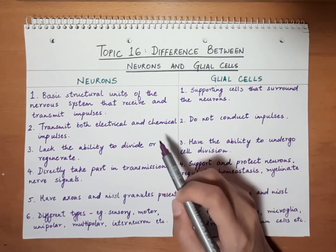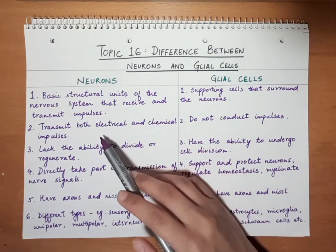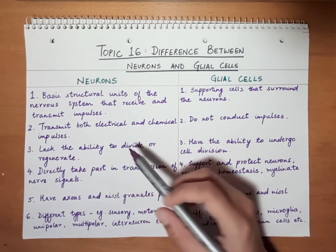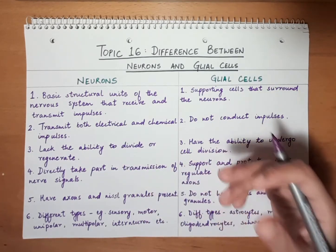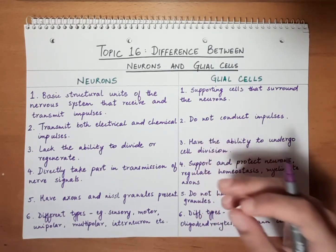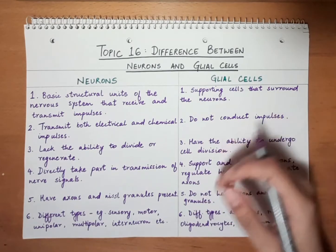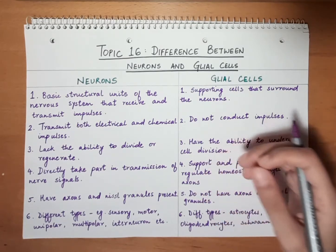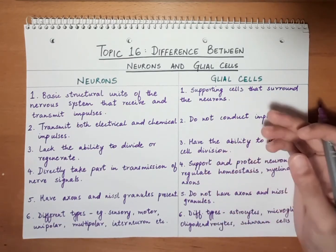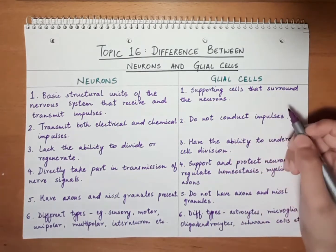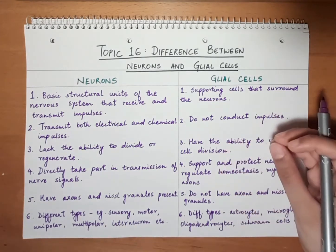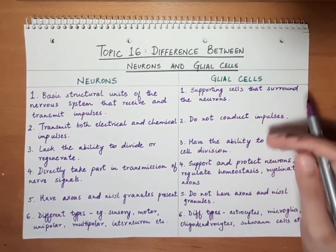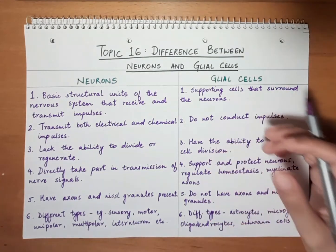The second difference is that neurons transmit both electrical and chemical impulses. As we studied in the synapse chapter, there are electrical and chemical synapses, so neurons can transmit both types of signals. On the other hand, glial cells do not conduct any electrical or chemical impulses — they are not directly involved in the neurotransmission process.